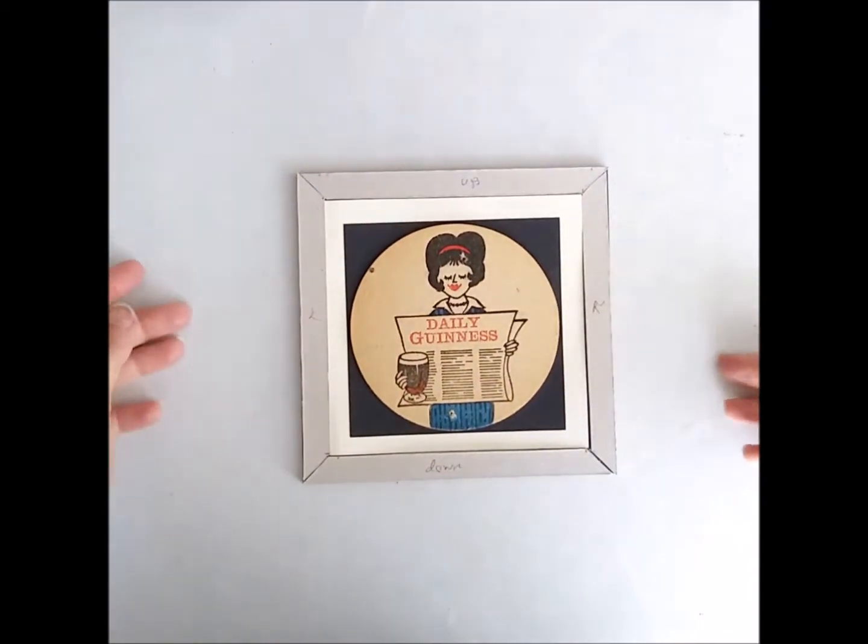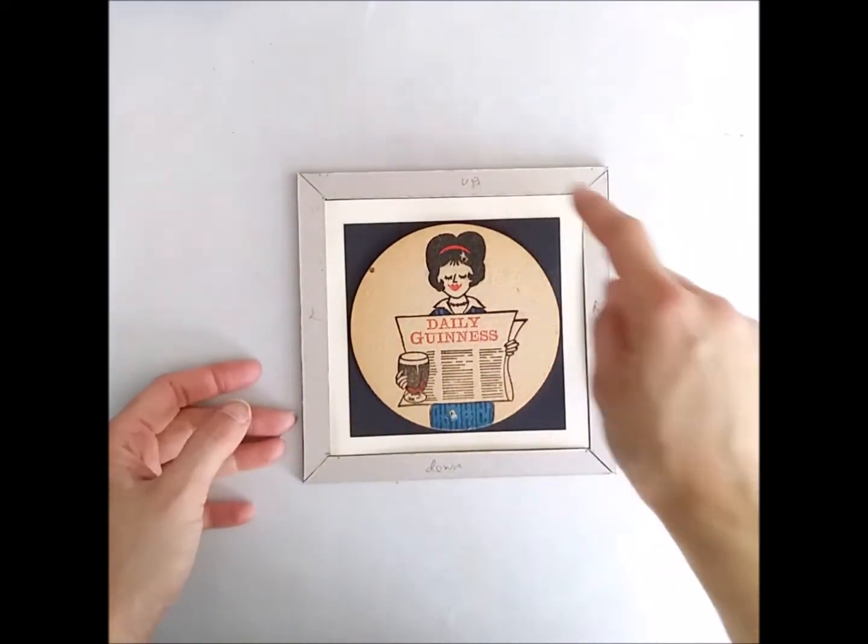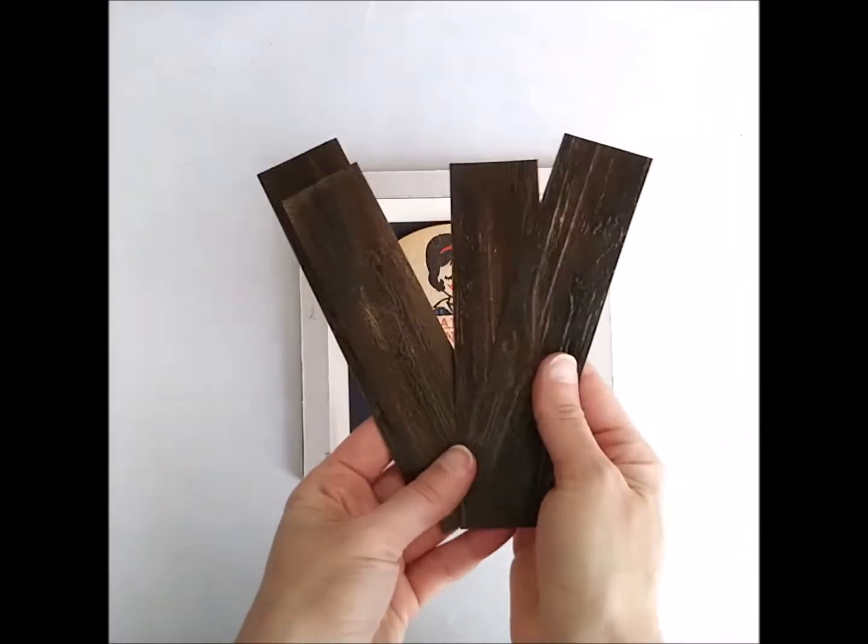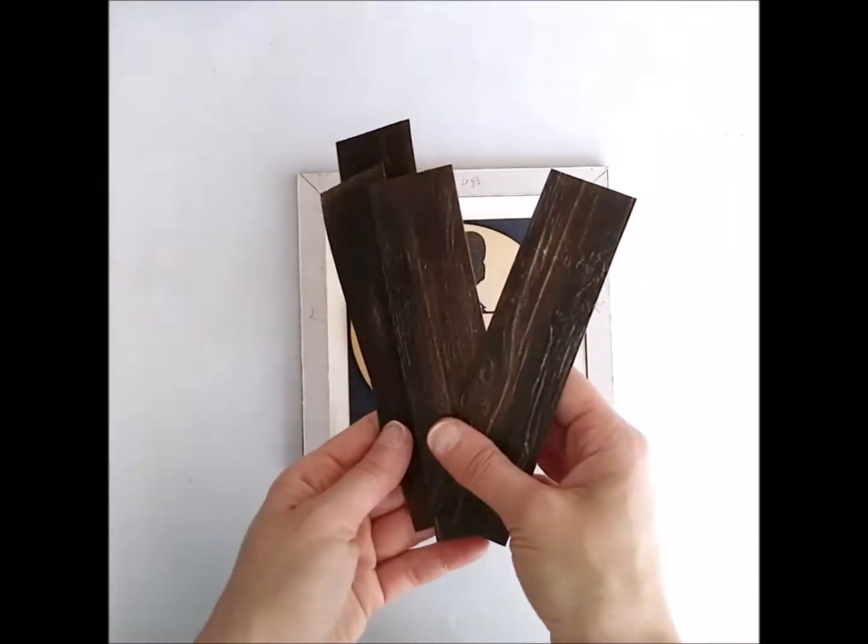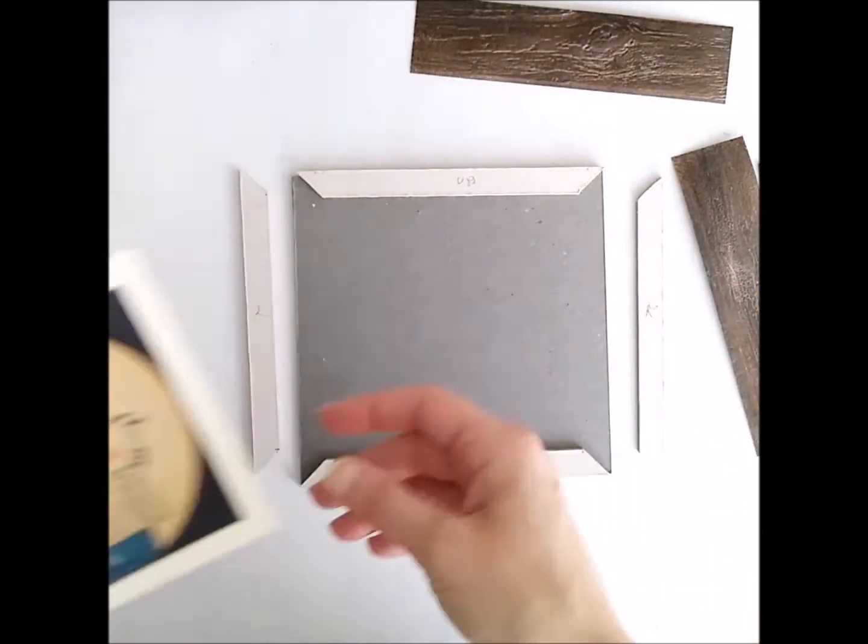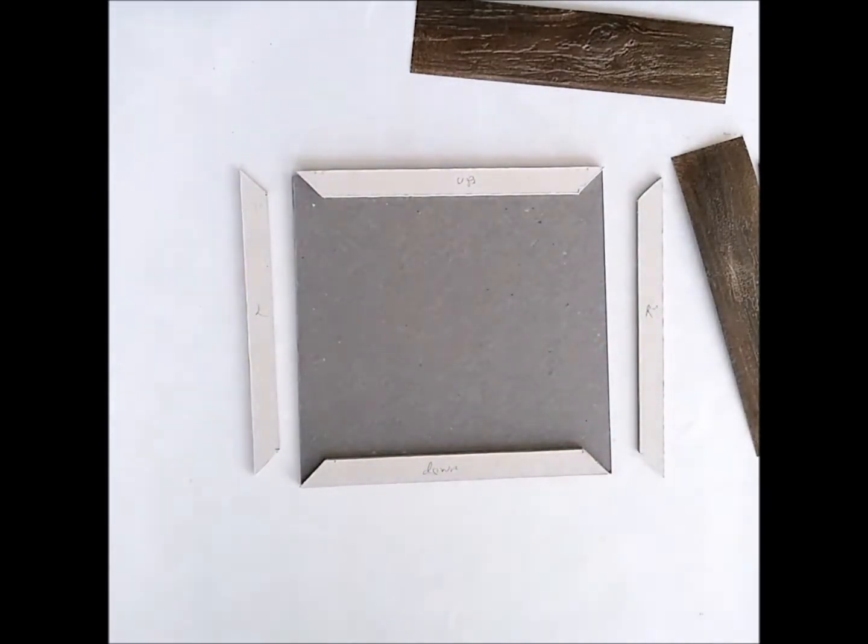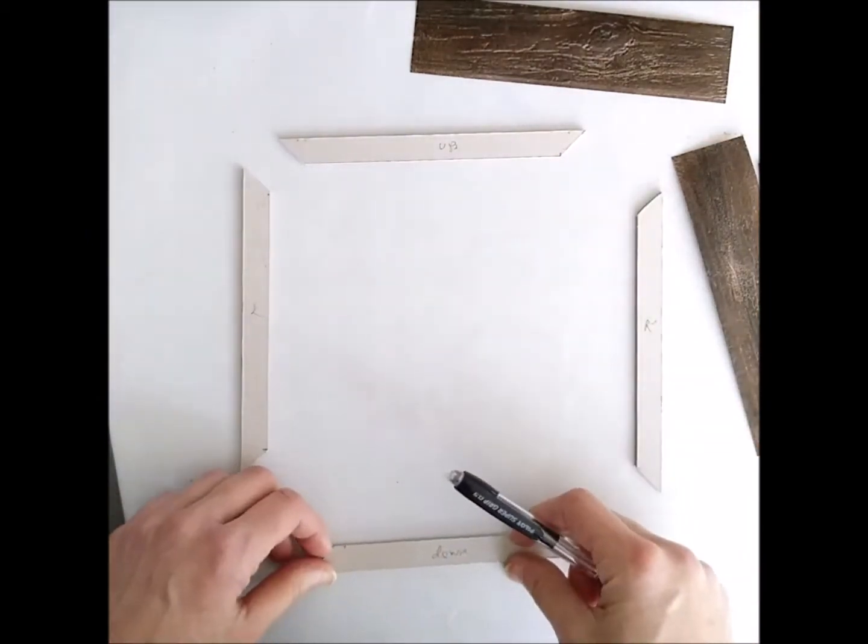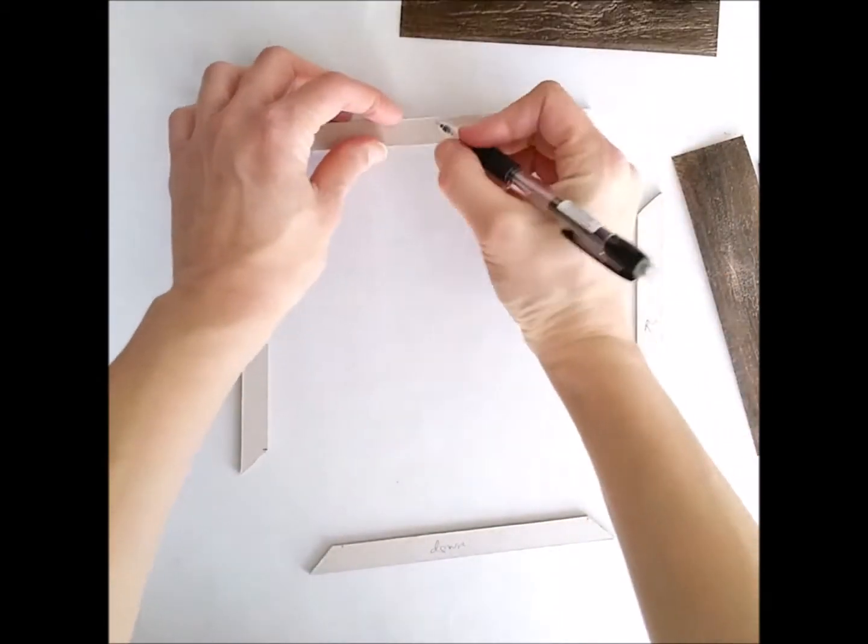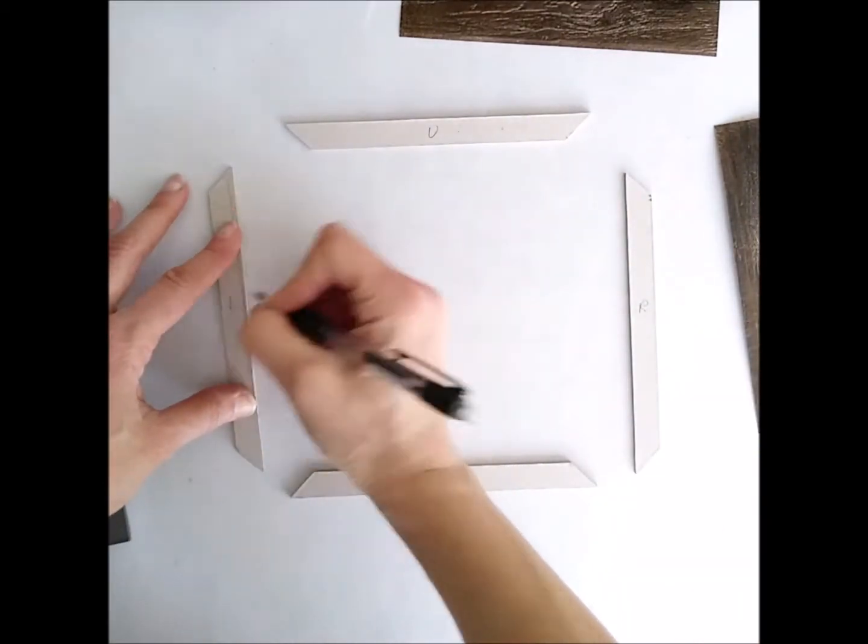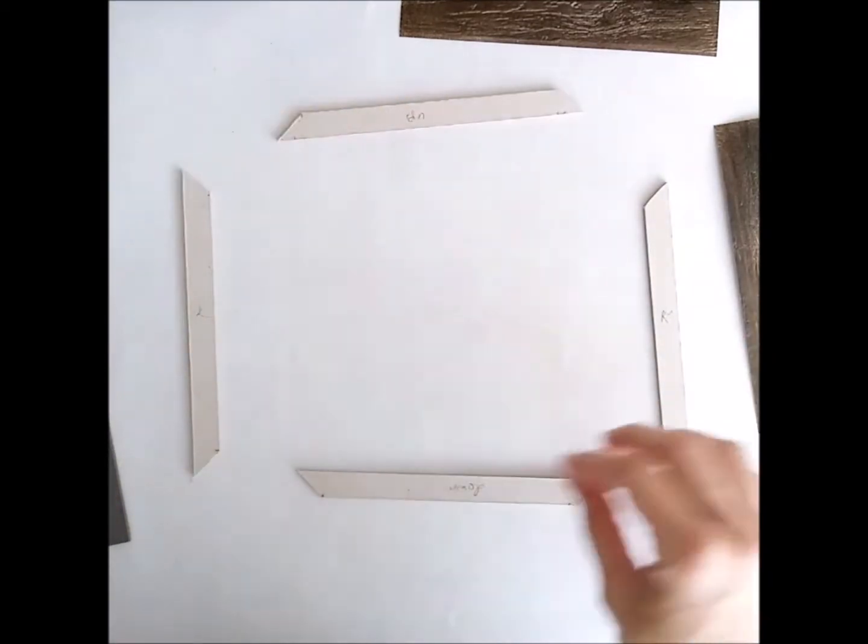Once we're happy with how everything fits together, we can cover the base with the wood grain paper. I marked the different panels to remember exactly where they're positioned, and I cut the wood grain paper into strips that will fit the size of the panels with enough for fold. You'll see in a second what I mean. So I'll just put this aside somewhere safe and then we'll start gluing things together, which is kind of exciting. Okay, I will also mark the positions on the back because we will actually cover the marking that I did before.